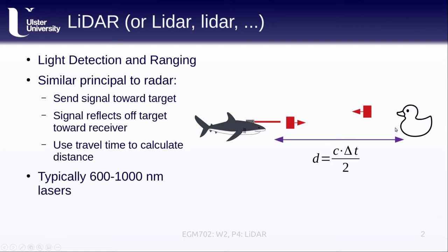Typically, LiDAR is using 600 to 1,000 nanometer wavelength lasers. So these are wavelengths ranging from the visible green portion of the electromagnetic spectrum up into the near-infrared.